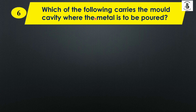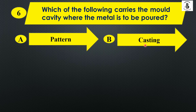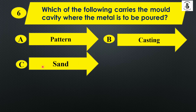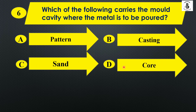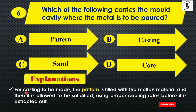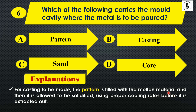Which of the following carries the mould cavity where the metal is to be poured? Option A: pattern, Option B: casting, Option C: sand, and Option D: core. For castings to be made, the pattern is filled with molten material and then allowed to solidify using proper cooling rates before it is extracted out. So the right answer is Option A, pattern.